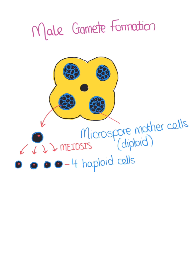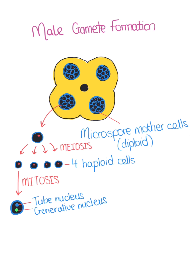Each of these haploid cells undergoes mitosis. To keep the diagram as simple as possible, we will concentrate on one of these cells, but do remember that all of the cells undergo mitosis. During mitosis, the nucleus in the haploid cell turns into two separate nuclei, called the tube nucleus and the generative nucleus.